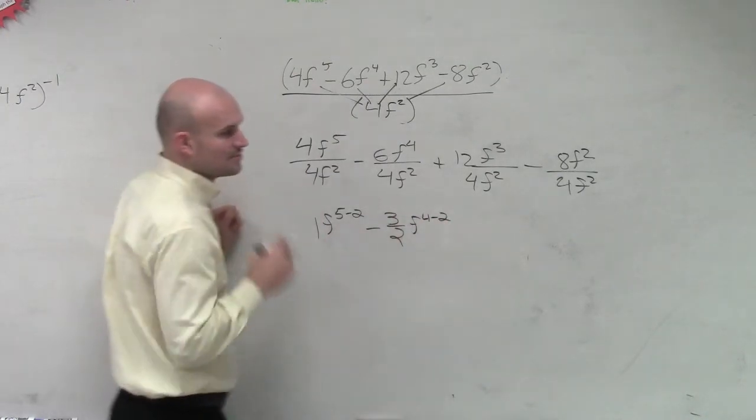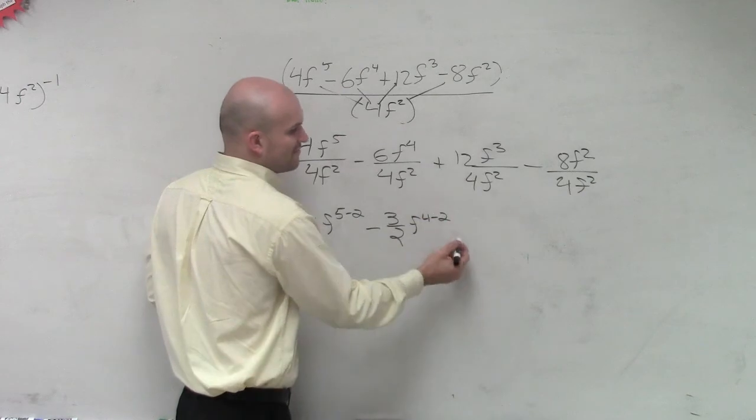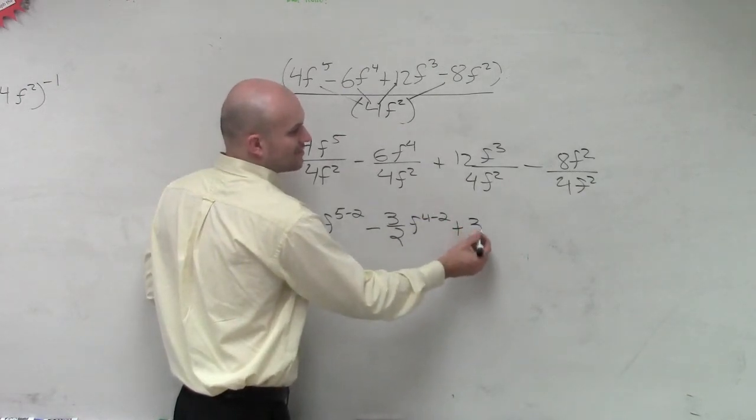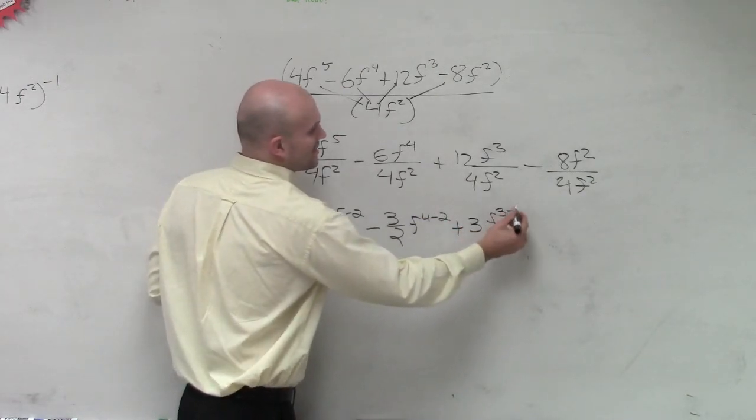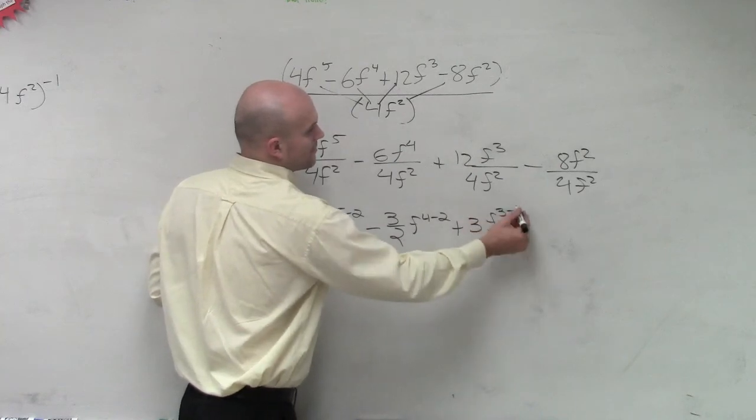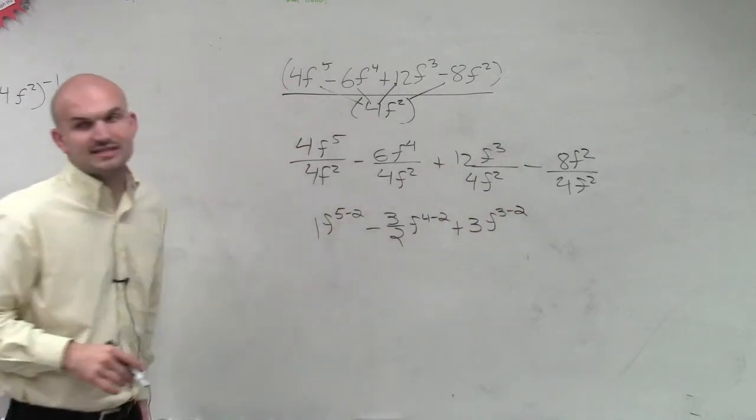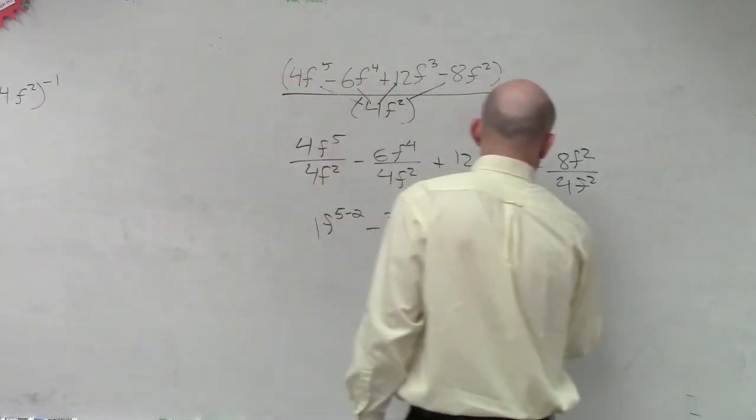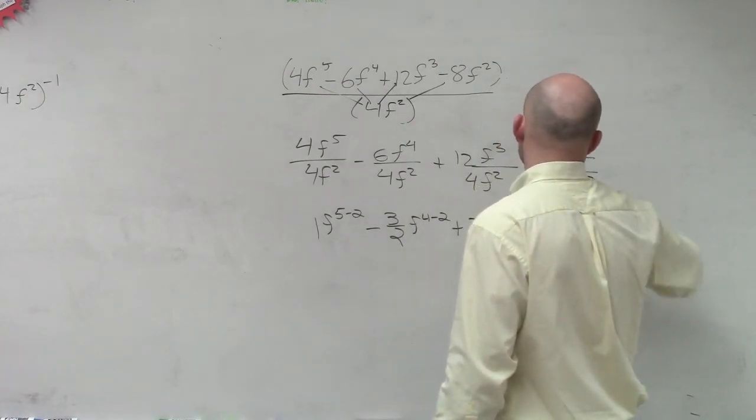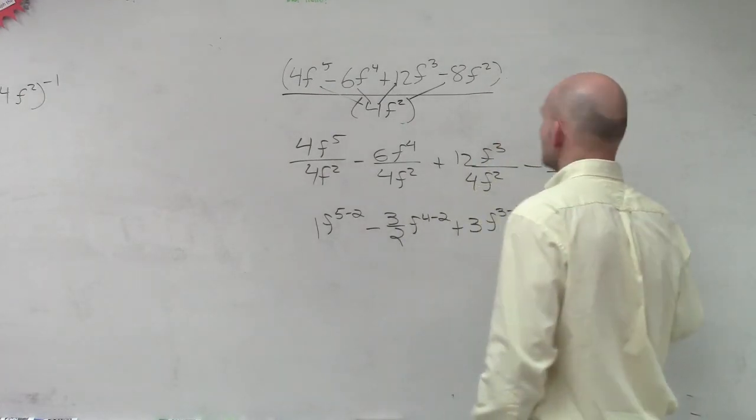12 divided by 4, positive 12 divided by 4 is 3, f to the 3 minus 2. Then the last one, negative 8 divided by 4 reduces down to a negative 2, f 2 minus 2.